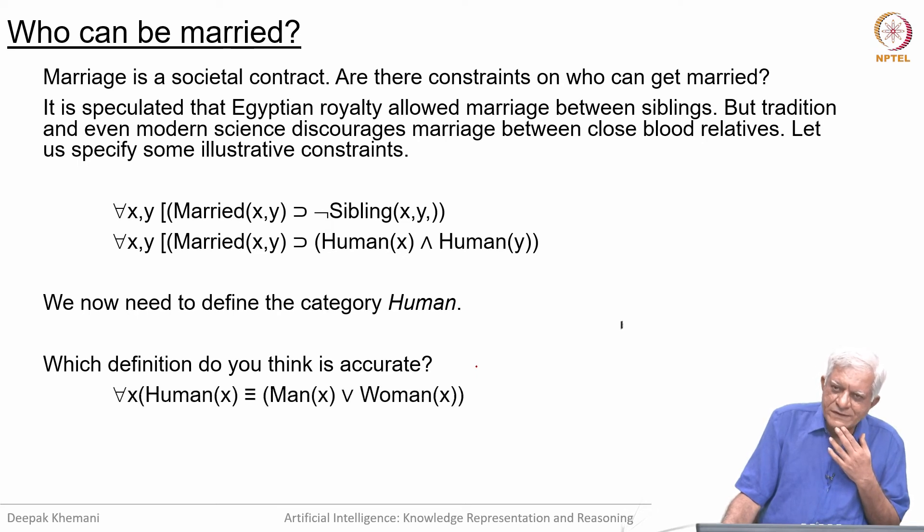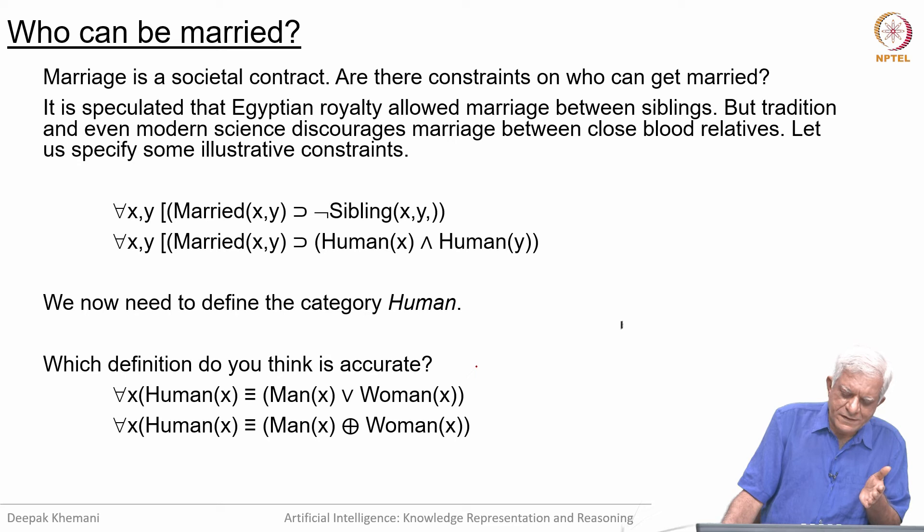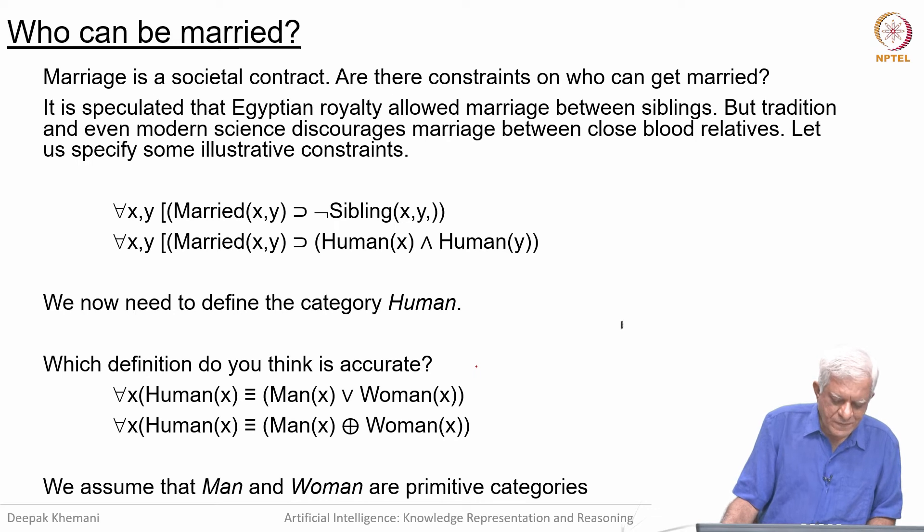But we need to define what it means to be human. I am giving you a choice of two definitions, and I will leave it to you to think which one is more accurate. The first uses the inclusive or, the second uses the exclusive or. The exclusive or definition says you are human if either you are a man or you are a woman. The inclusive or definition says you are human if you are a man or a woman, and it keeps the possibility of somebody being both open. It is a matter of definition. Here we are defining human in terms of the categories man and woman, which we assume are well defined.